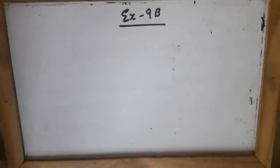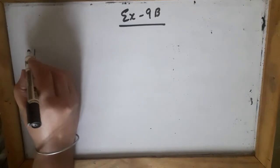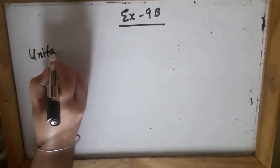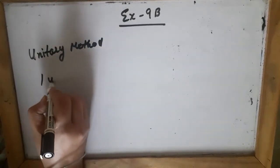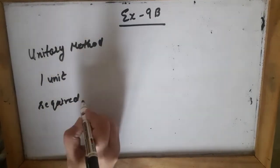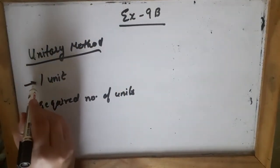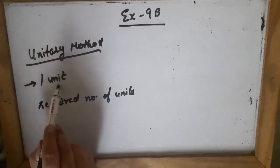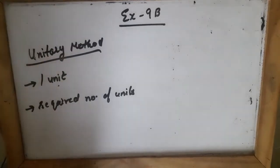Good morning students. Today we will start with the next exercise of your lesson 9, Unitary Method. In the last lecture I told you what is Unitary Method. Unitary Method is a technique in which we first find about one unit and then we find about the required number of units. First we find about one unit because unit means one, and then we find about the required number of units.